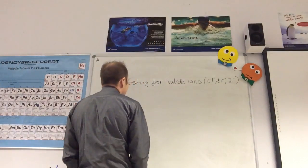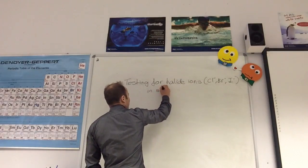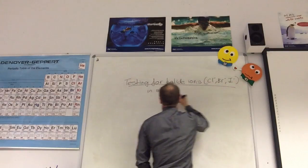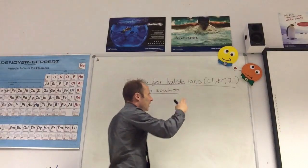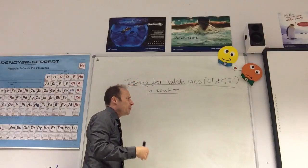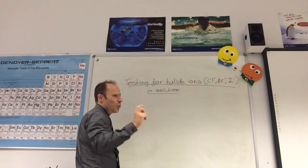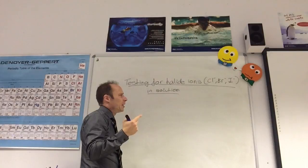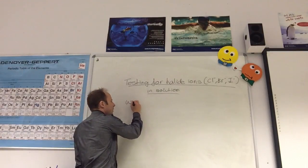Sometimes we're given a solution, or you may be given a compound which you then dissolve into water, and you need to tell whether it's got chloride, bromide, or iodide ions in it. So it could be sodium chloride, sodium bromide — you'll be given just a white solid. How do you tell whether it's got chloride, bromide, or iodide ions in it? Well, you use silver nitrate solution.